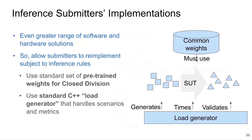We also want to discuss the flexibility we provide for inference submitters, given the great range of software and hardware solutions. In the closed division, we have a common set of weights that everyone must use. Another key contribution is the load generator — a piece of software that generates data samples, times the inference for the system under test, validates inference results, and measures both inference speed and accuracy. With this common tool and common model, submitters can re-implement solutions subject to comprehensive inference rules published on GitHub.